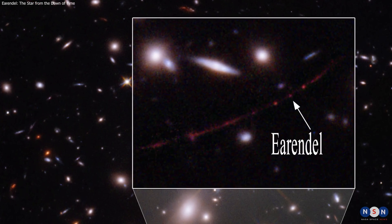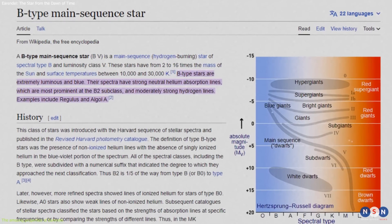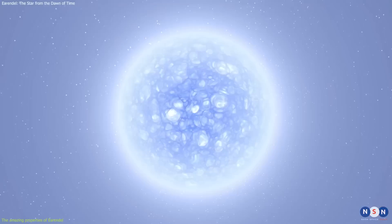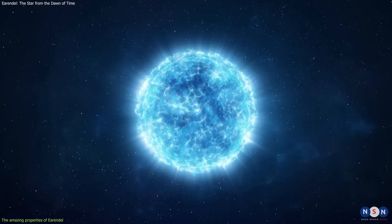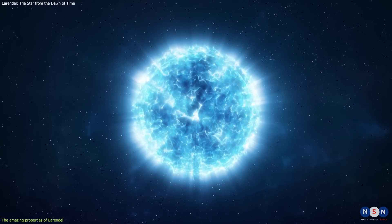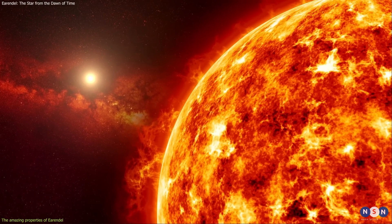What makes this star so special? Well, for starters, it belongs to a class of stars known as B-type stars, which are massive, hot, and bright. These stars are among the most luminous stars in the universe, and they have a short lifespan of only a few million years compared to our sun's 10 billion years.